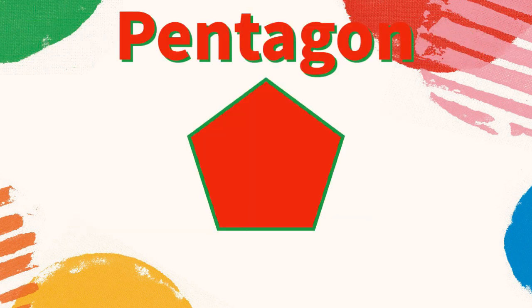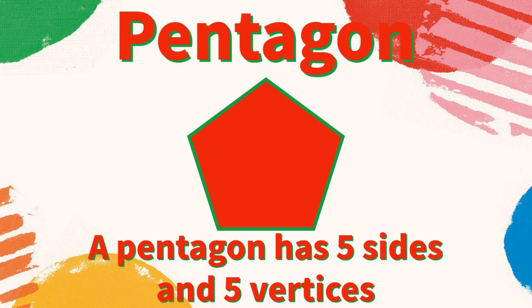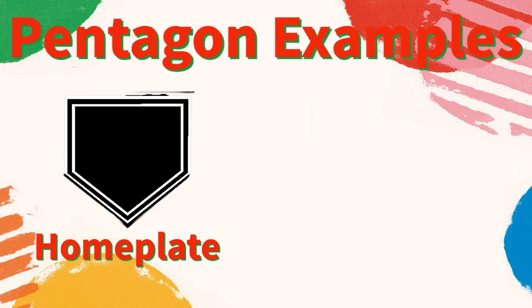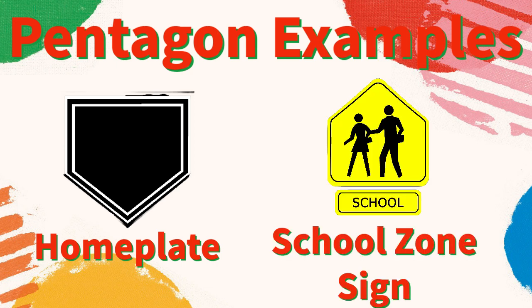Pentagon: a pentagon has five sides and five vertices. What are some examples of pentagons? The home plate in baseball is a pentagon, the sign of a school zone is a pentagon. What other pentagons can you think of?